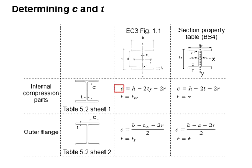c means h minus 2t flanges minus 2 radius top and bottom, or h minus 2t.